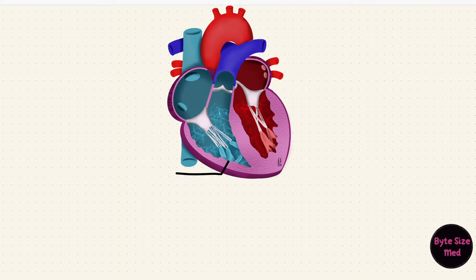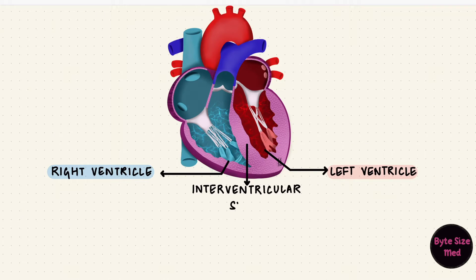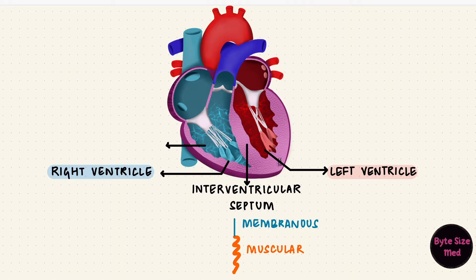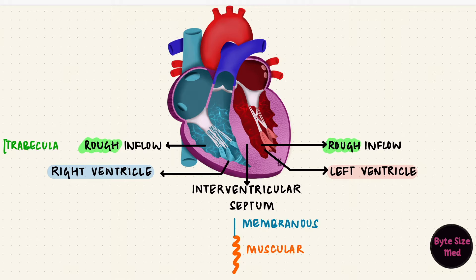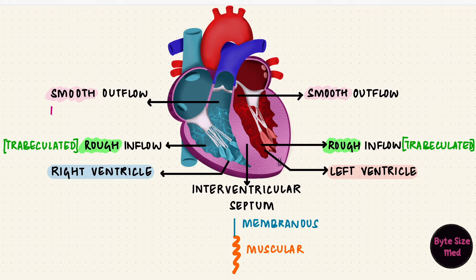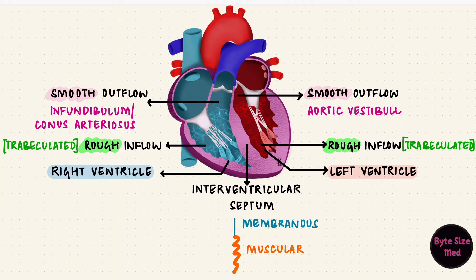First let's look at some of the structures that need to develop, and then we'll go back and see how that happens. There are two ventricles, the right and the left, and they are separated by the interventricular septum. This septum has a muscular portion below and a membranous portion above. The ventricles have a rough inflowing part, rough because they're trabeculated with trabeculae carneae and papillary muscles. They have a smooth outflowing part — that's the infundibulum or the conus arteriosus in the right ventricle and the aortic vestibule in the left ventricle.